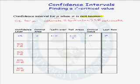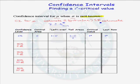The confidence interval for mu when sigma is not known is given by x-bar, because that's what we use to estimate the population mean mu, plus or minus the t-critical value from the t-distribution. We need to know the degrees of freedom, given by n minus 1. The standard error of x-bar is the sample standard deviation s divided by the square root of n.